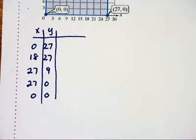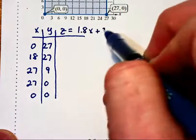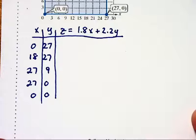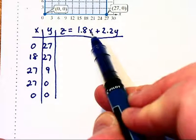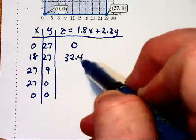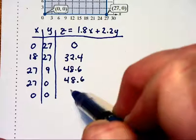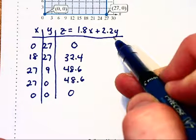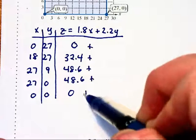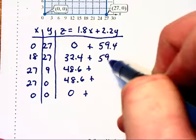Now z is going to equal 1.8x plus 2.2y. So we're going to substitute that in and let's start by multiplying each of these x values by 1.8. That will give us 0, 32.4, 48.6, and then 48.6 again, and 0. And then each of the y values by 2.2. This will give us 59.4 for the first two points being substituted in.